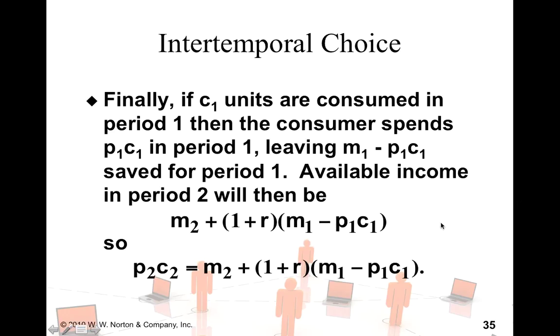Let's say that there is some positive saving in the first period. So m1 is the total income available. p1 c1 is the total expenditure on the first period consumption bundle. So when I subtract that from my total available income, I get the savings for the first period. They grow at the rate of 1 plus r. And with m2, which is my second period income, there is a total consumption that I could have.